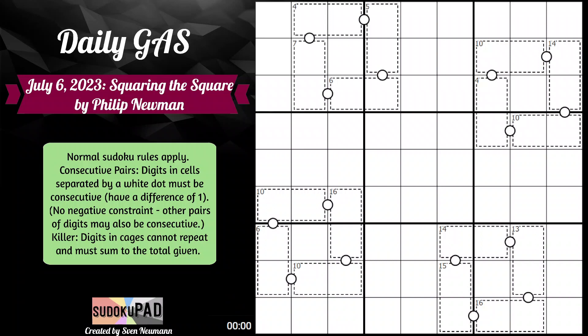Hello, and welcome to the Daily Gas of July 6, 2023, called Squaring the Square by Philip Newman. Look at the rules: normal Sudoku rules apply. Consecutive pairs - digits in cells separated by a white dot must be consecutive, have a difference of 1. No negative constraint - other pairs of digits may also be consecutive.